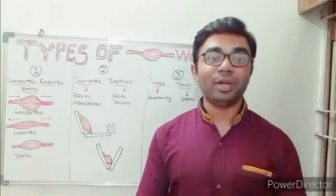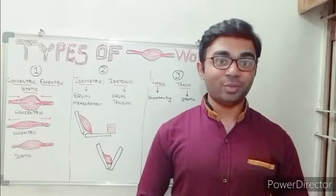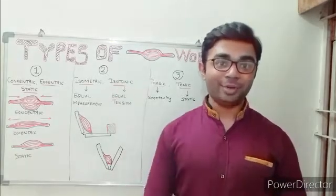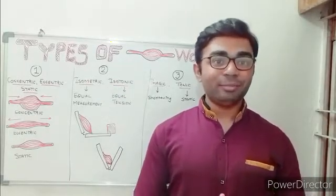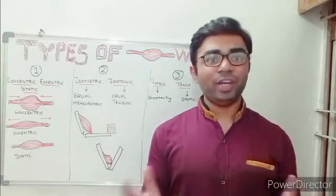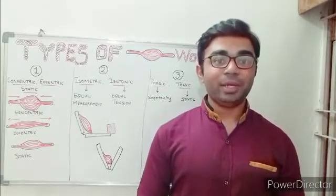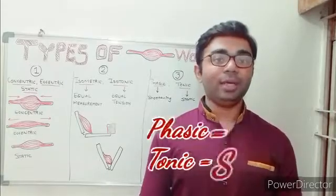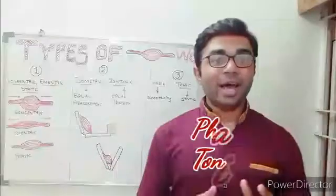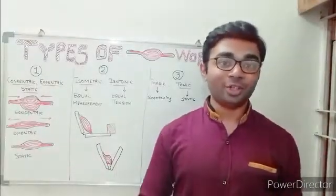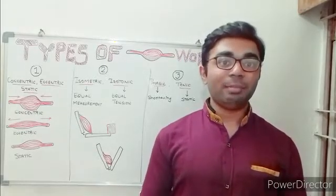The last set of muscle work types is phasic as well as tonic type of muscular work. These terminologies are not frequently used nowadays, but we need to understand that phasic means shortening and tonic means static. These terminologies are replaced by newer terminologies—isotonic and isometric that I have just explained—but we must remember these two terminologies.